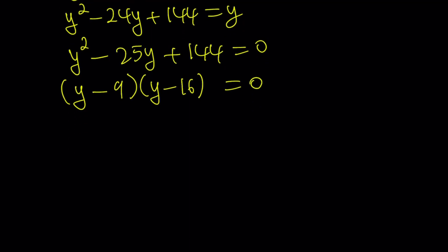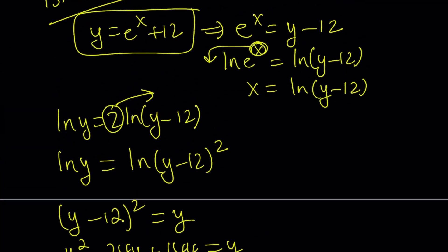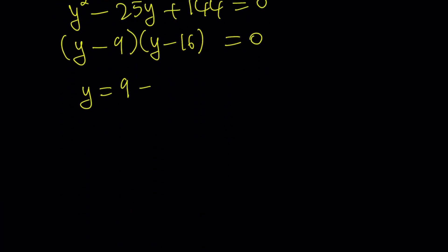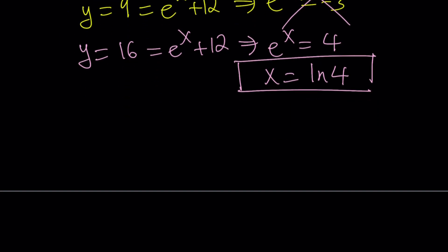Great. So from here, we get the following solutions: y = 9 and y = 16, but y is e^x + 12, so we can go ahead and back-substitute that. So this is equal to e^x + 12, and this implies e^x = -3, which makes no sense at all, because e^x is always positive for real values of x, so we can't really get any real solutions from here. What about y = 16? That gives us e^x + 12 = 16, which implies e^x = 4, and at this point, you can use definition of logs or just ln both sides. You're going to get x = ln 4 from here. Great. So we only get one solution, which is ln 4, and the other solution just doesn't work.